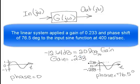The linear system applied a gain of 0.233 and phase shift of 76.5 degrees to the input sine function at 400 radians per second.